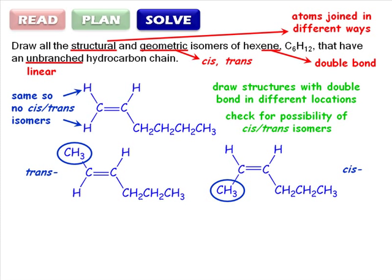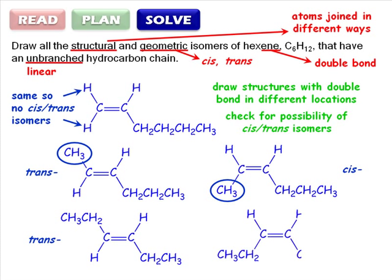Okay, move the double bond again. Now it's in the center of the molecule. The trans isomer has been drawn here, and again, we can draw the cis isomer just by swapping the position of the ethyl groups.